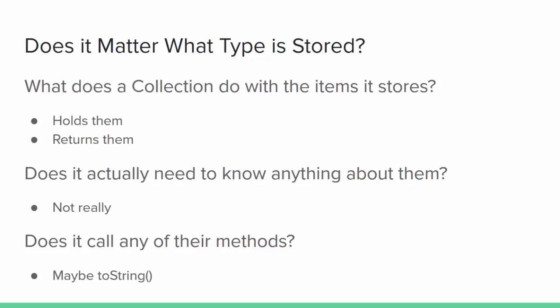It might seem crazy at first that a collection class doesn't need to know what it's storing in advance, but it makes more sense when you think about what a collection does. It holds objects and then it returns them. It doesn't interact with those objects while it's holding them. At most, it may call the toString method as part of its own toString method, but that's a method every class will have.